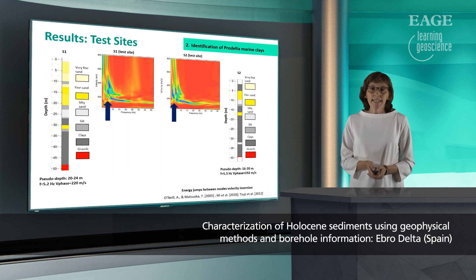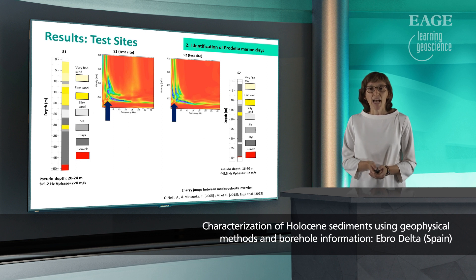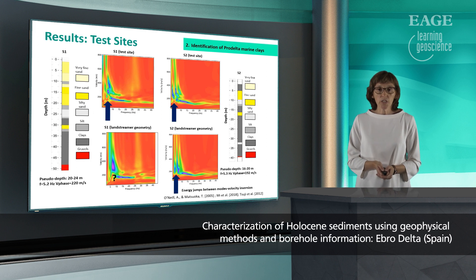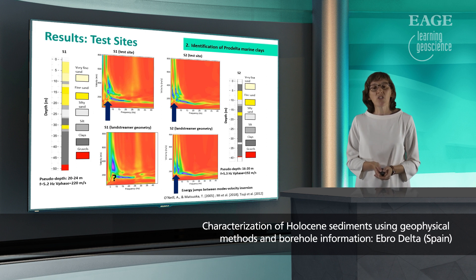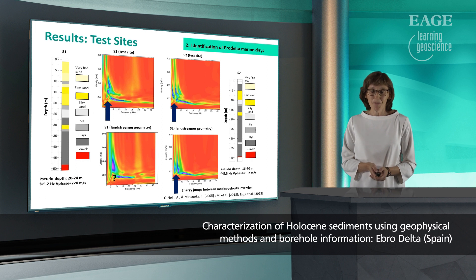Using the dense geometry at the test site has allowed us to match the energy jumps in high-resolution FK plots. But what happens if we use a smaller number of receivers, as we did for the extended survey? We introduce a comparison between FK plots from two sides along a streamer acquisition. The FK plot at S2 shows separation between modes, in contrast to the energy overlap that characterizes S1, where clays are deeper. Hence, it is expected that only if the pro-delta clays are shallow will we be able to constrain the depth of the clay top using the energy jump parameters.